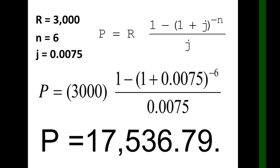And you will get 17,536.79. Round off your answer to the nearest hundreds. So that is the present value of the savings of Mrs. Garcia from her monthly deposit of 3,000 for 6 months.